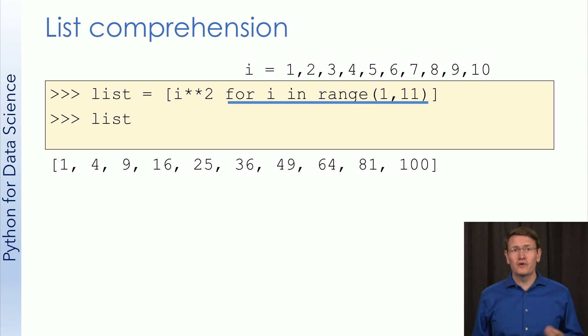Next, let's focus on the first part of the statement. i star star 2 means i squared. So we're saying we want i squared for each of the values of i, which we know will be 1 through 10. The result is a list with all the squares from 1 through 10, just like we wanted.